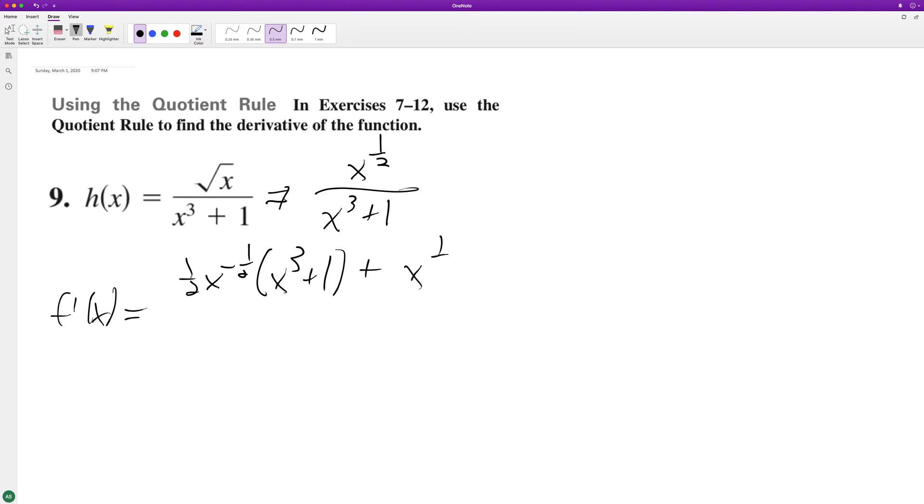Plus the numerator times the derivative of the denominator, so 3x squared, all over x cubed plus 1 squared. When we finalize this and simplify it out, we'll have...